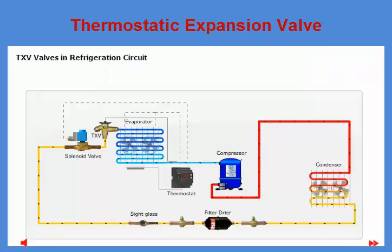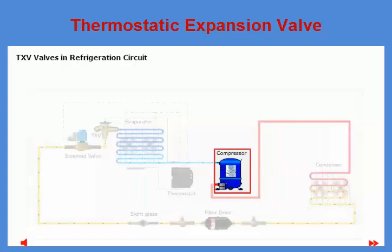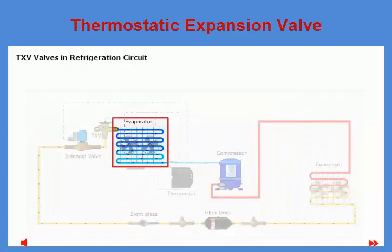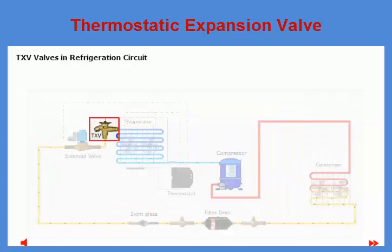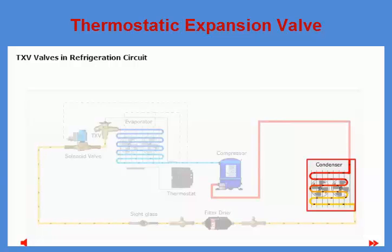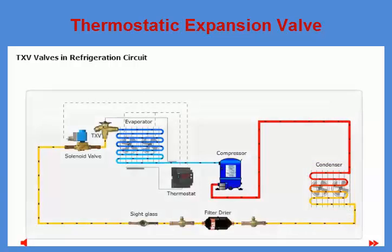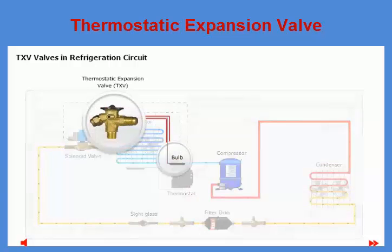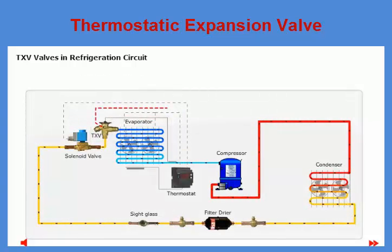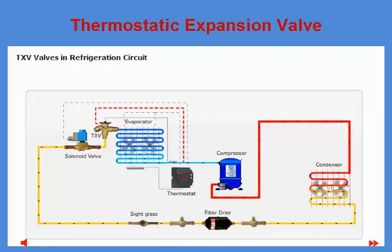Here you can see a basic refrigeration system with a compressor, evaporator, thermostatic expansion valve or TXV, and condenser as the main components. The thermostatic expansion valve is mounted in front of the evaporator, with the bulb and external equalizing line mounted on the suction line just after the evaporator.